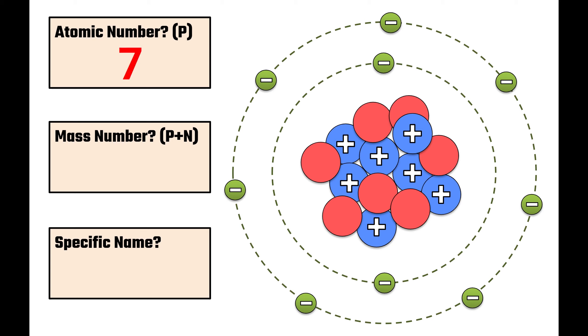The next question asks, what is the mass number? Mass number for an atom means how many protons plus neutrons are there? Well, we already counted that there's seven protons, so let's count the neutrons. One, two, three, four, five, six, seven. So seven protons plus seven neutrons means the mass number is 14.